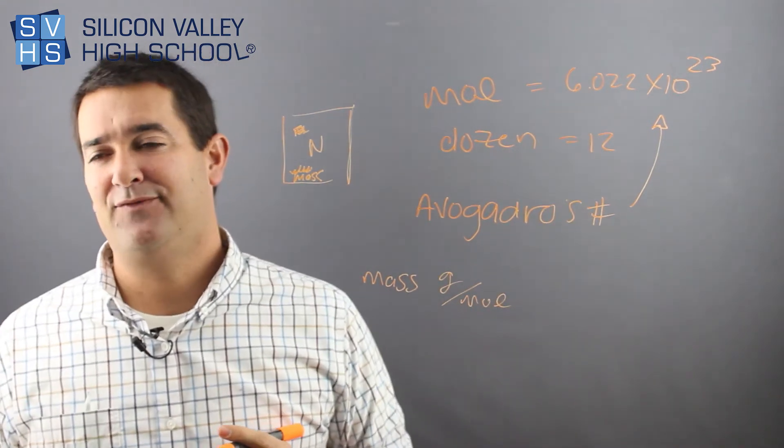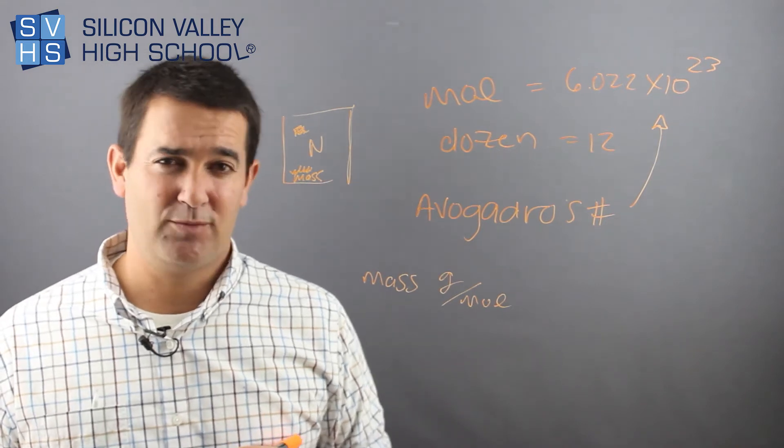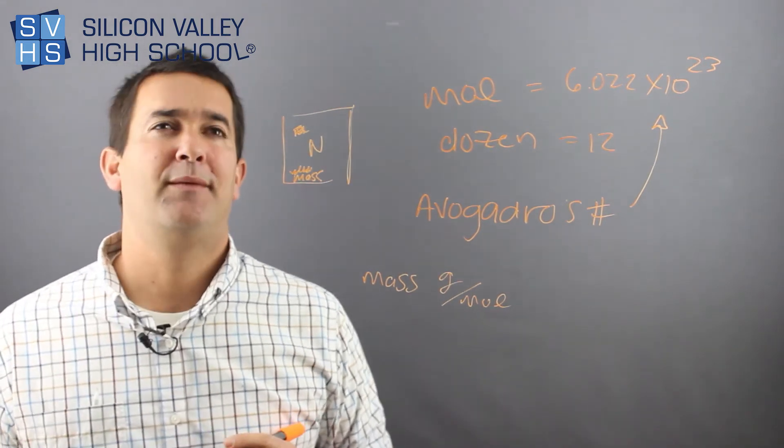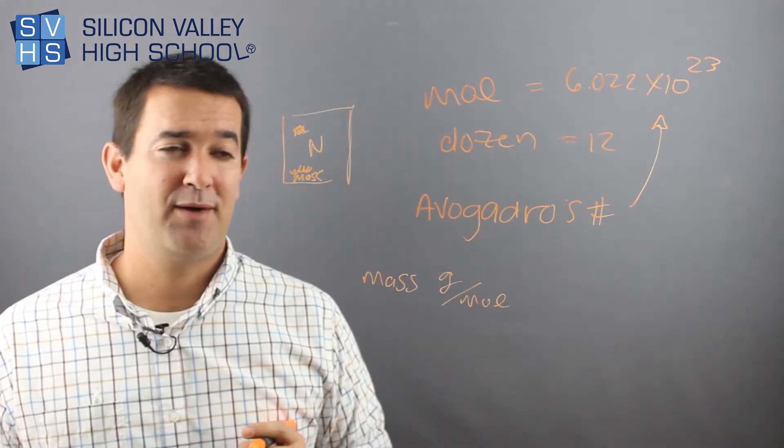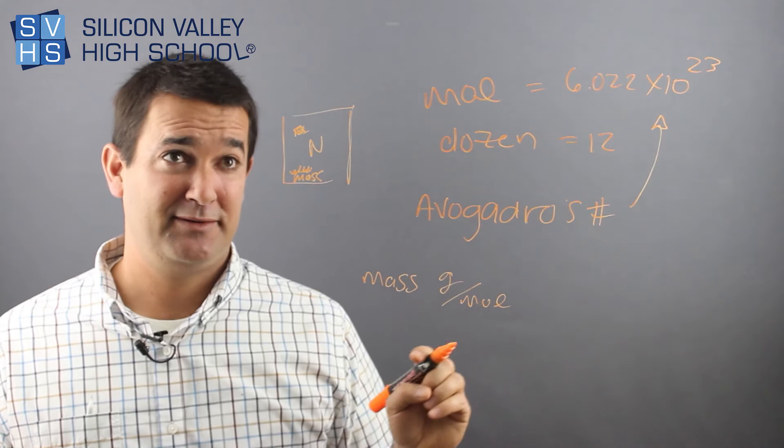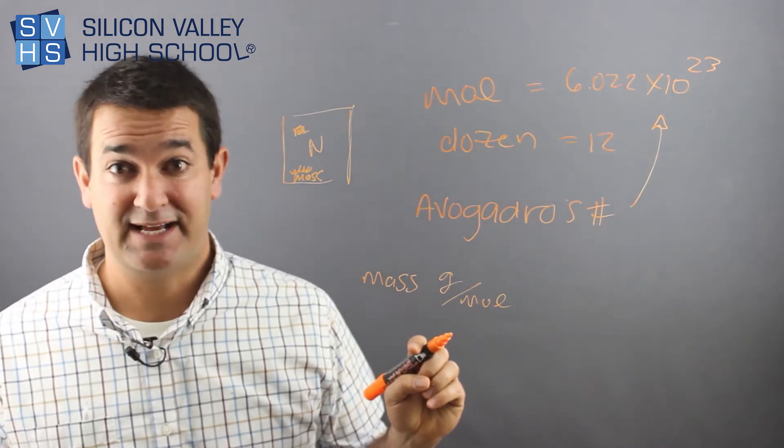Right? So it would be kind of like if we just gave weights in normal stuff as per dozen. Oh, how much do bowling balls weigh? About 200 pounds a dozen, right? Or how much do eggs weigh? I don't know, about 40 ounces a dozen.